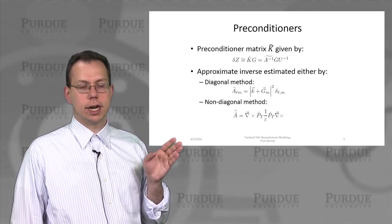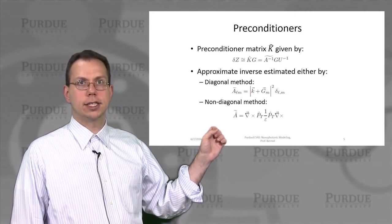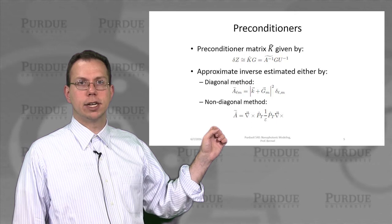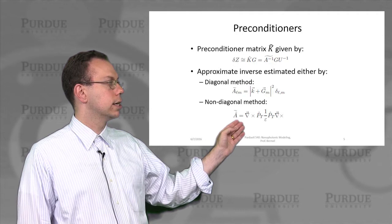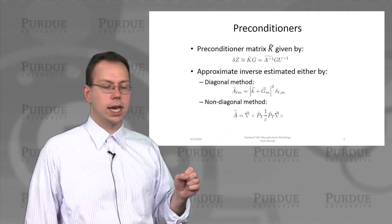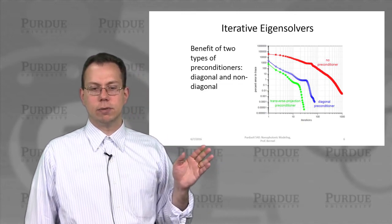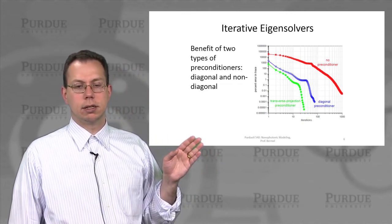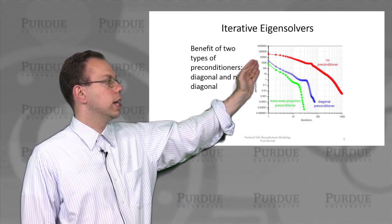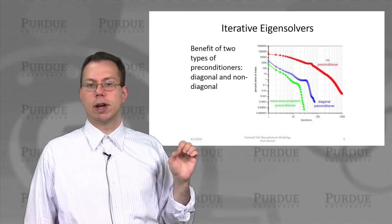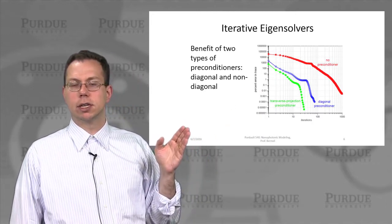However, there's a non-diagonal method as well which is important for highly contrasting structures with a lot of periodicity and other interesting behavior. And so then here you would actually project the epsilon inverse and explicitly calculate this A. And so this is kind of showing what happens when you perform the three different calculations. First of all, you can see in red what happens when you have no preconditioner whatsoever. It does start to converge after a number of iterations. It takes a while.